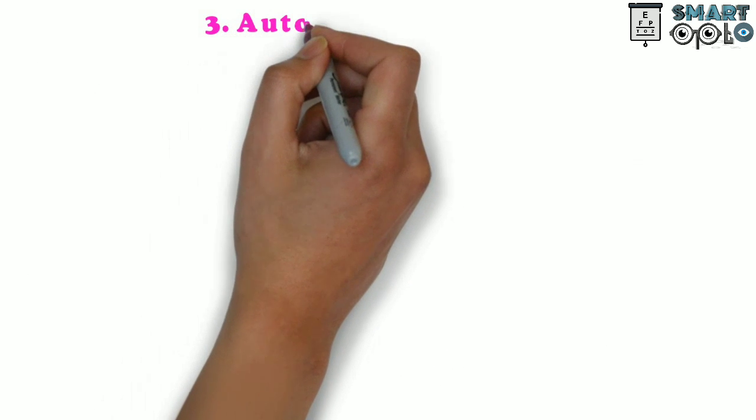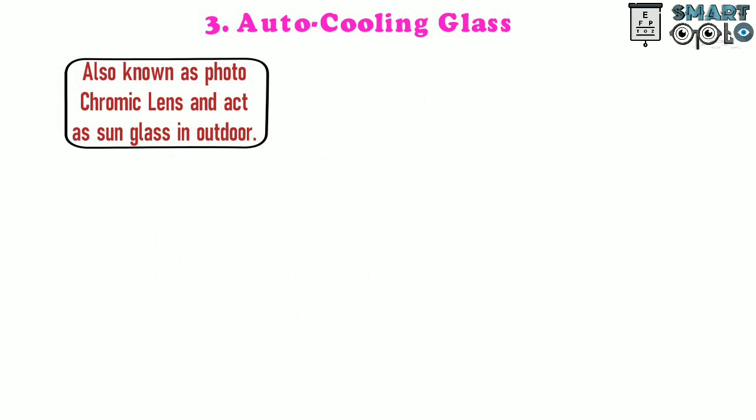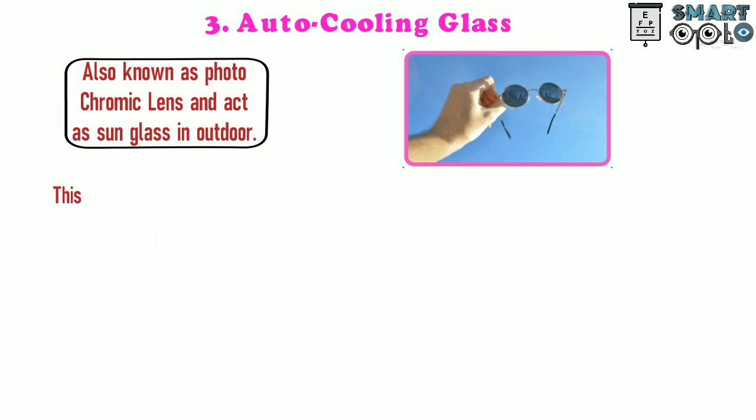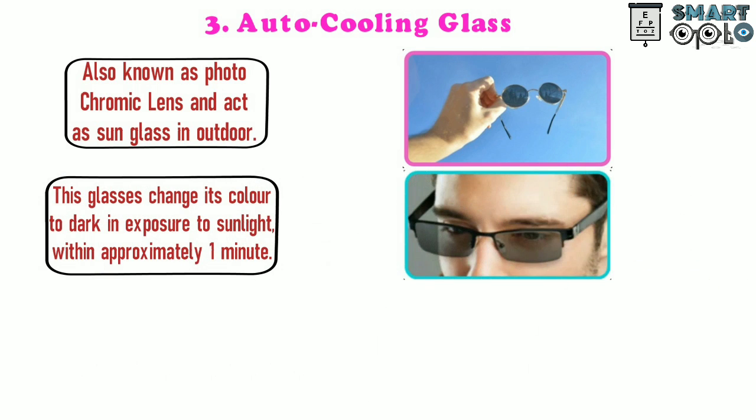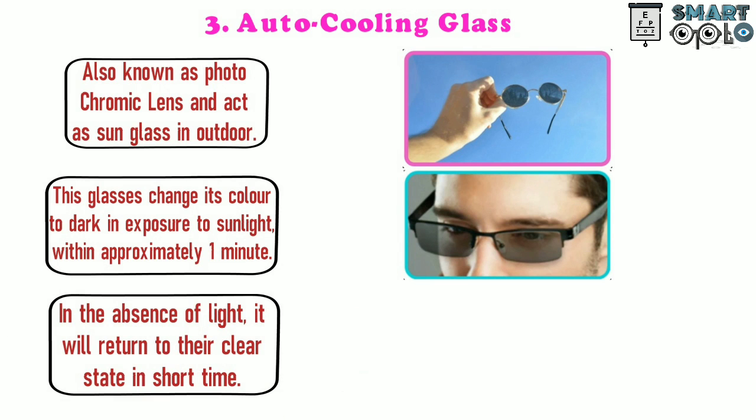The third type of special glass is auto-cooling glass, also known as photochromatic lens and act as sunglasses in outdoor. These glasses change their color to dark in exposure to sunlight within approximately one minute. In the absence of light, it will return to their clear state in short time.